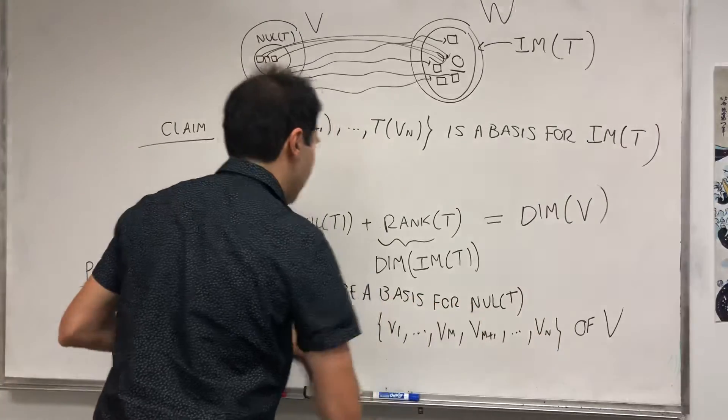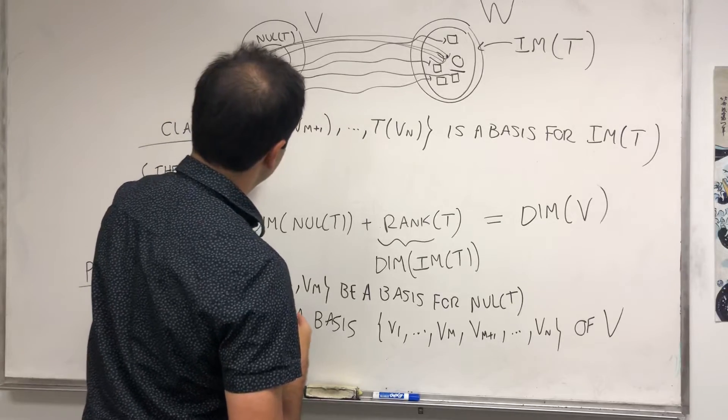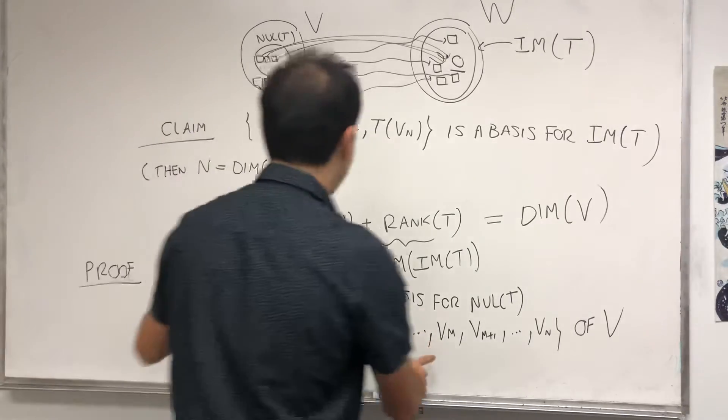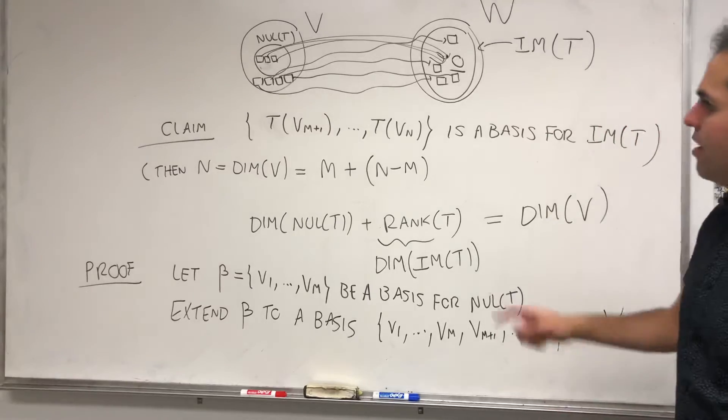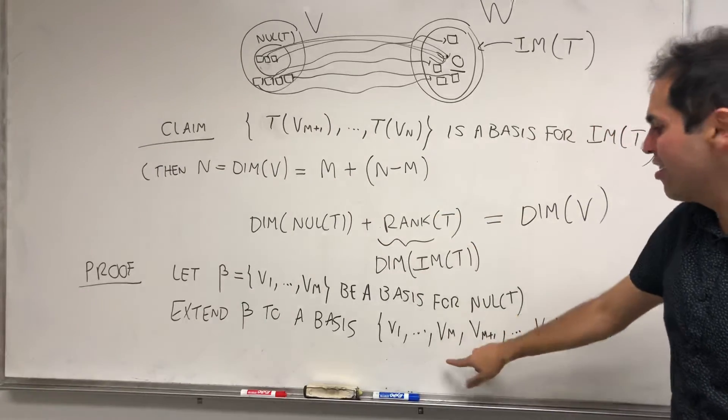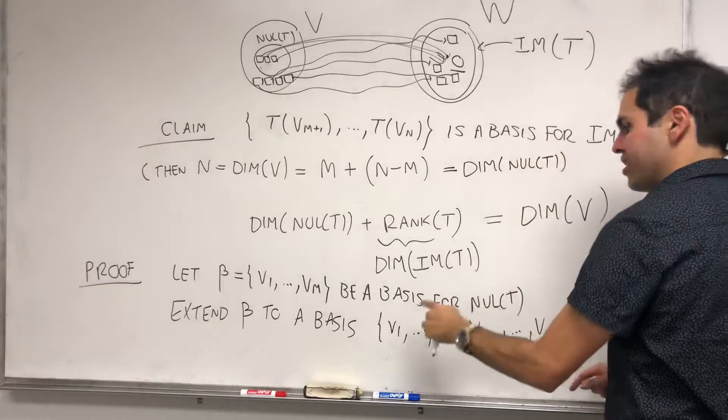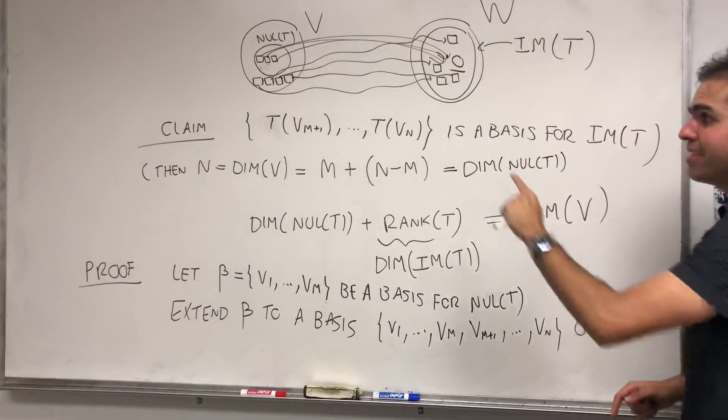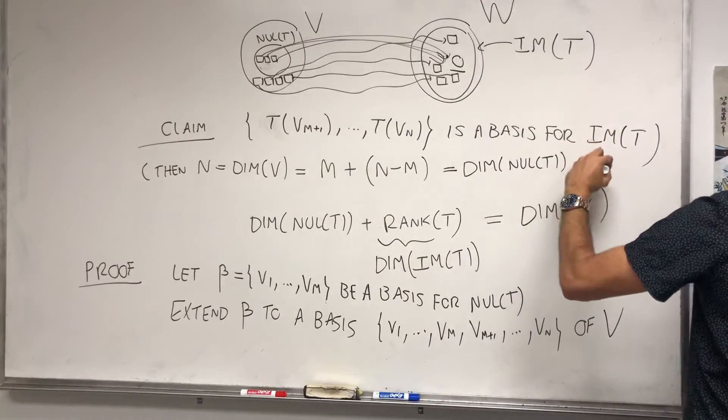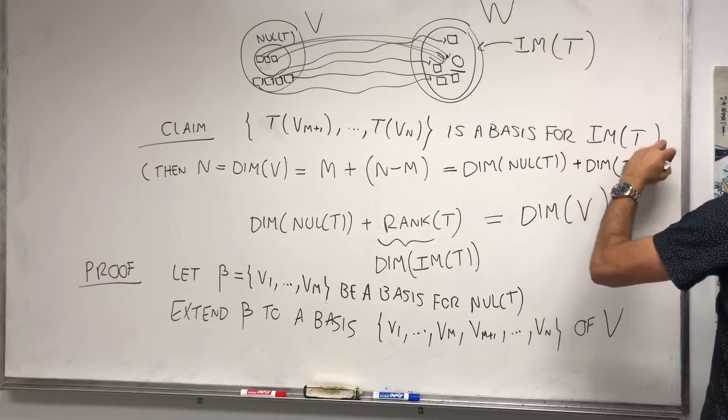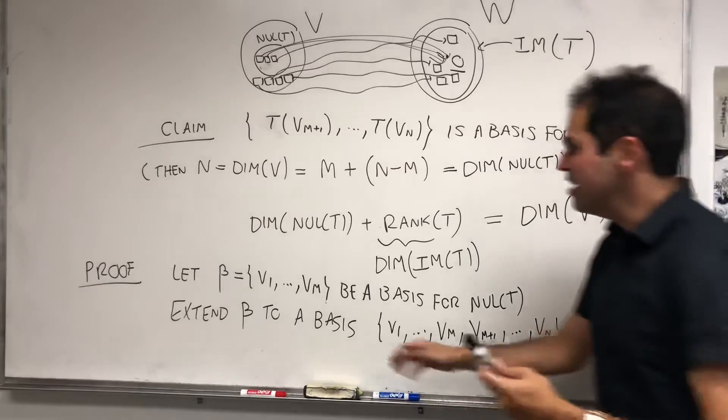So claim: T(Vm+1), ..., T(Vn) is a basis for the image of T. Why would we be done? Because then n, which is the dimension of V, would be equal to m plus n minus m. This is trivial, but look, m is the dimension of the null space. And then this one has n minus m vectors, so that would be the dimension of the image of T. And then the point is, once we show this is a basis, then we're done. So let's show it.